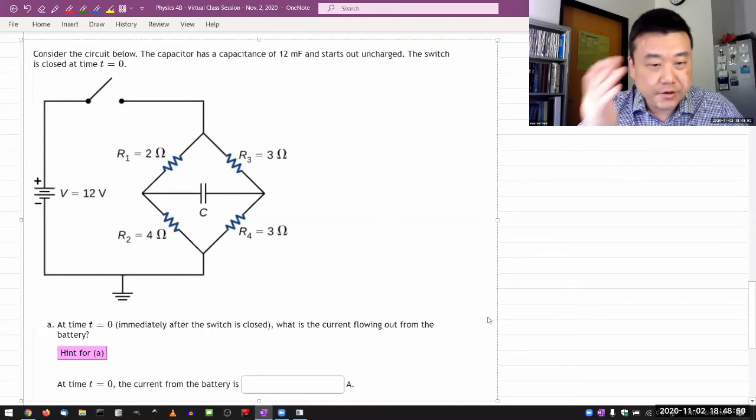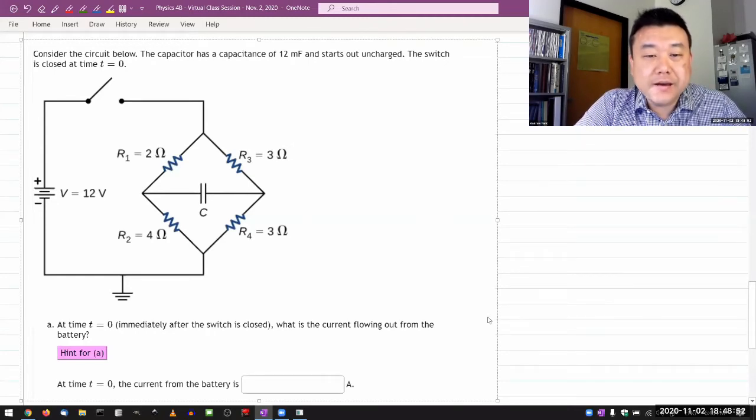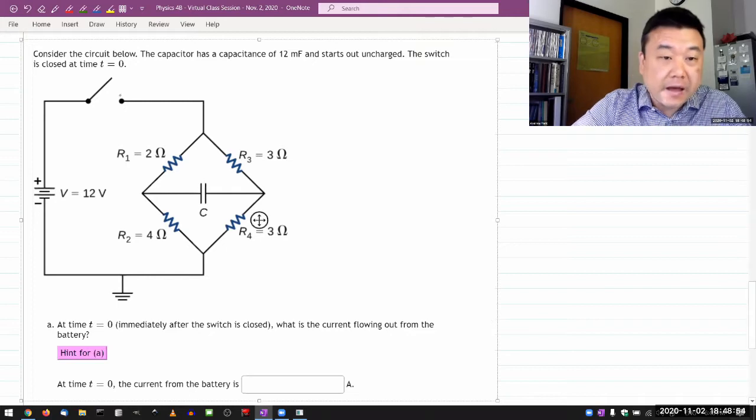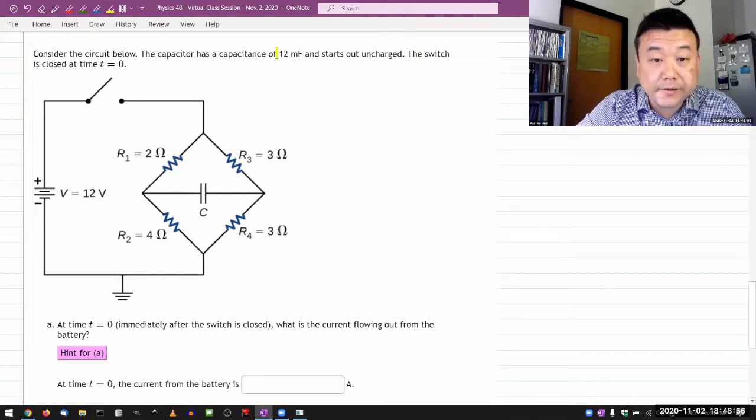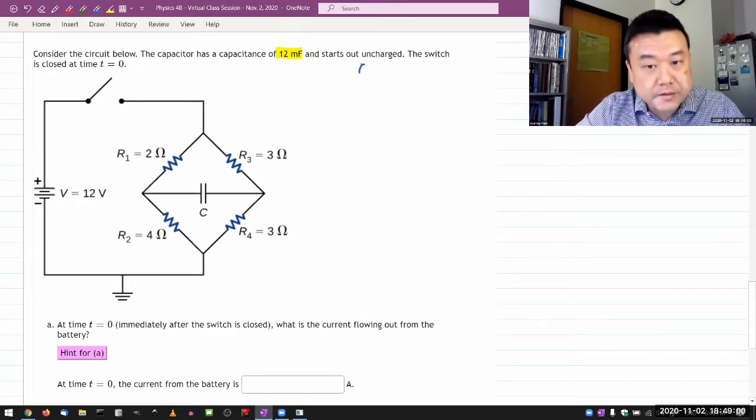The problem says consider the circuit below. The capacitor has some capacitance, which is a given quantity, and starts out uncharged. That's good to know - it's the common assumption, but good to have it verified.